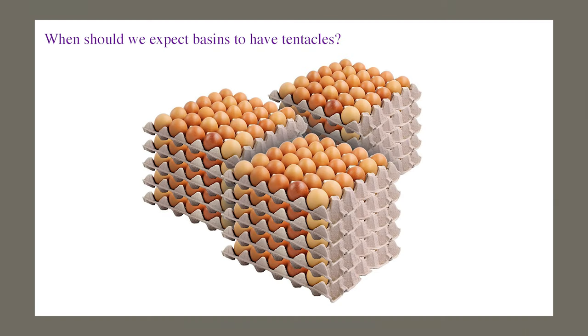So when shall we expect basins to have tentacles? It is difficult to give a precise statement here because there are just so many ways a state space can be divided. However, we know that localized shapes are very inefficient in filling high dimensional spaces. You need exponentially many eggs to fill a room as the number of dimensions is increased. So if the number of attractors in your system increases sub-exponentially with the system dimension, then we know there must be some tentacles lurking around.